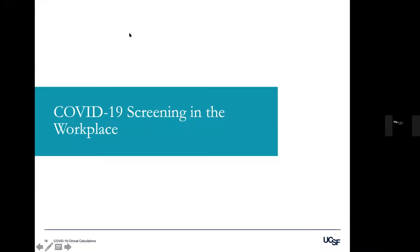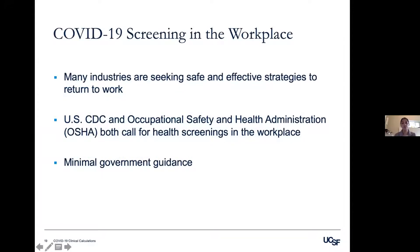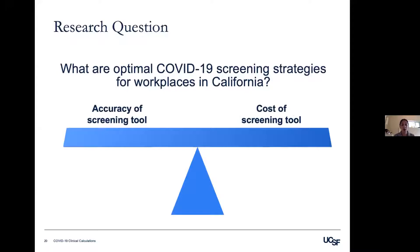I'm going to jump into the second part of our analysis, which is slightly broader in scope and focuses on the cost-effectiveness of COVID-19 screening in the workplace. As states across the country have moved to revoke shelter-in-place policies and reopen their economies, many industries are seeking safe and effective strategies to return to work, especially those that cannot sustain remote work for extended periods. While the United States CDC and OSHA both call for the implementation of health screenings in the workplace, neither specifies the optimal screening modality or the extent to which screening should be incorporated. We sought to answer: what are the optimal COVID-19 screening strategies to detect COVID-19 in the workplace?